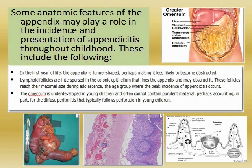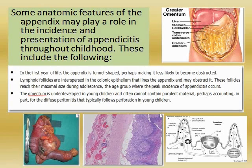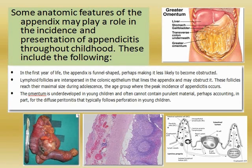The second anatomic feature is that lymphoid follicles are interspersed in the colonic epithelium that lines the appendix and may obstruct it. These follicles reach their maximum size during adolescence, and this age group has the peak incidence of appendicitis. In the lower panel, I have shown the picture of lymphoid hyperplasia and also the normal structure on the right side, which shows the intestinal epithelial cells, various lymph node tissues, isolated lymphoid follicles, lamina propria, and lymph vessels. This part of the intestine is exposed to the outside, which is why nature has provided so much lymphatic tissue here.